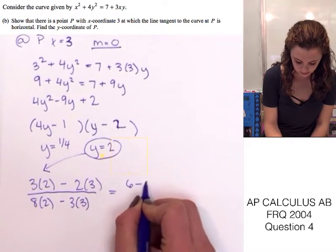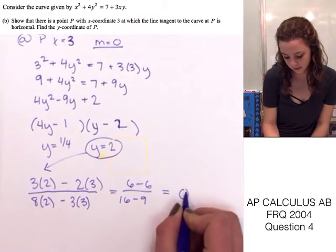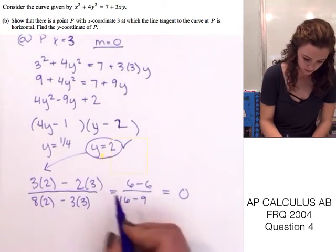And, this is going to be 6 minus 6 over 16 minus 9, which is going to give us 0. So, this one works.